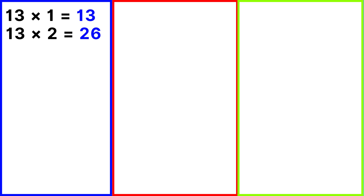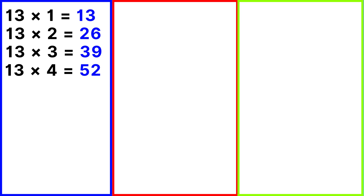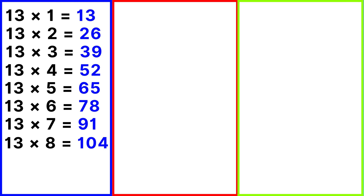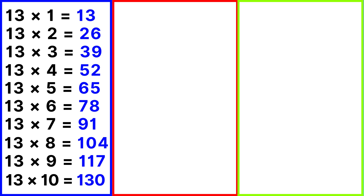Table of 13: 13 ones are 13, 13 twos are 26, 13 threes are 39, 13 fours are 52, 13 fives are 65, 13 sixes are 78, 13 sevens are 91, 13 eights are 104, 13 nines are 117, 13 tens are 130.